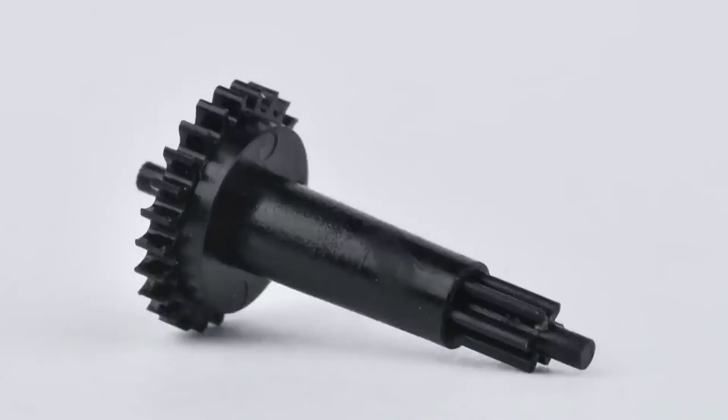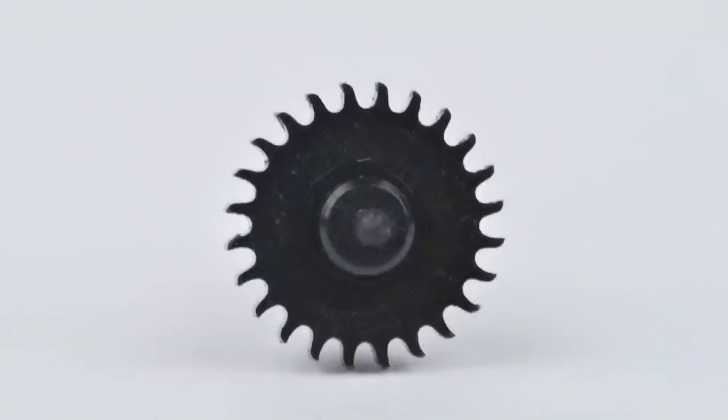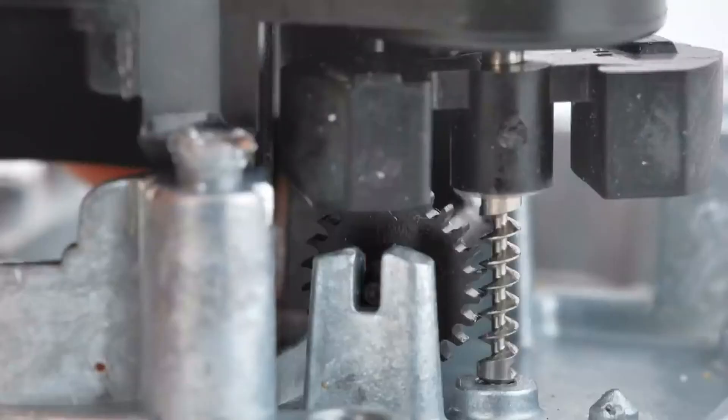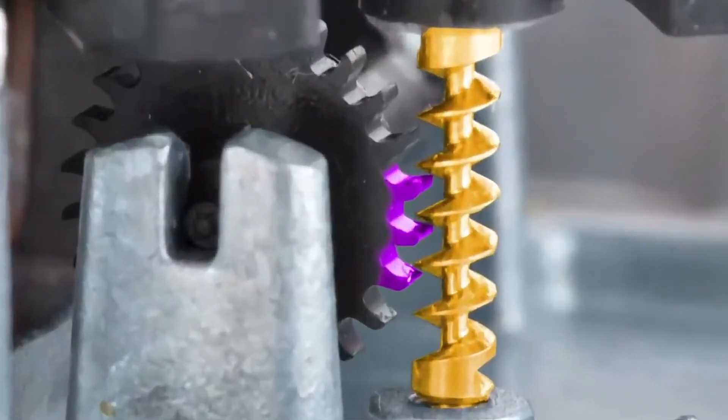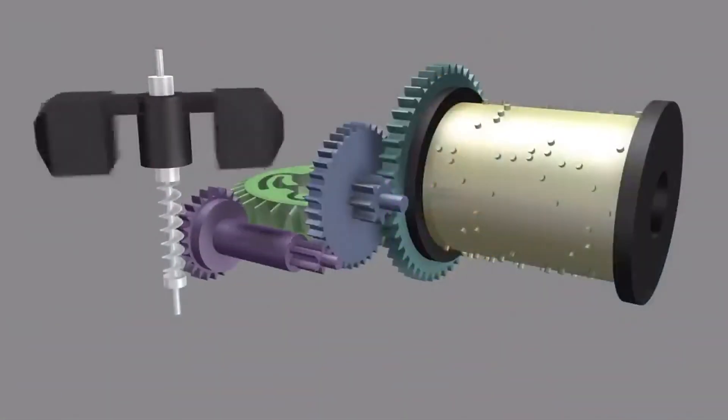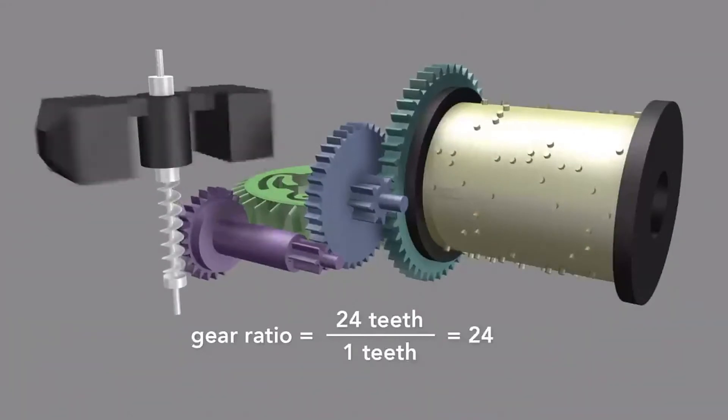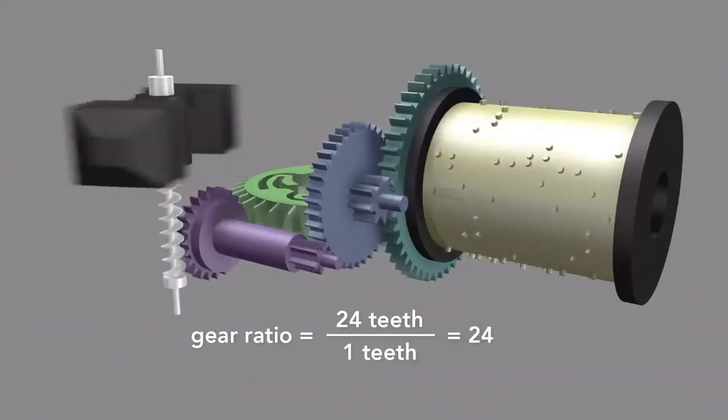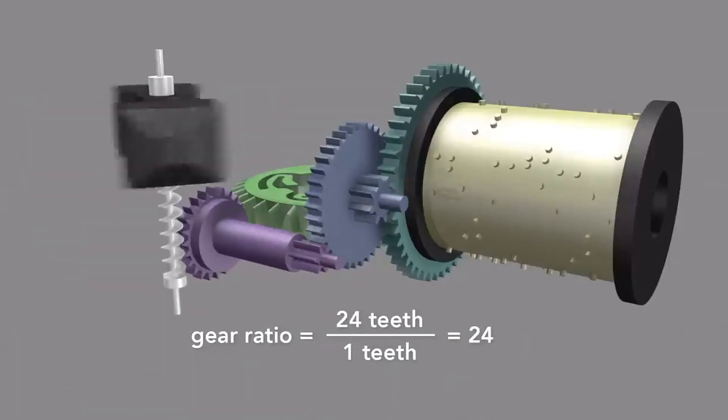The gear that engages the worm screw differs from the other gears. It has curled teeth. The shape of these teeth allows it to better engage the screw. The worm screw turns once for every tooth on the gear, and since there are 24 teeth, it multiplies the rotational rate by 24 times.